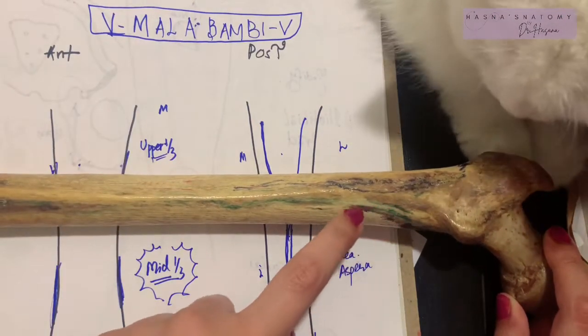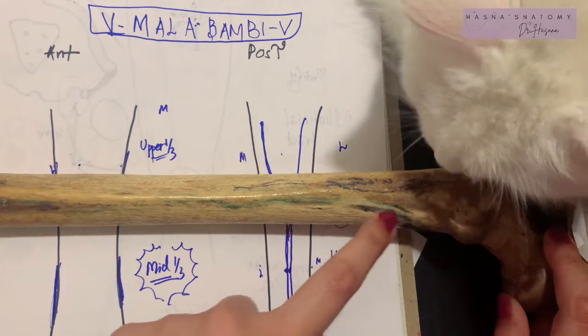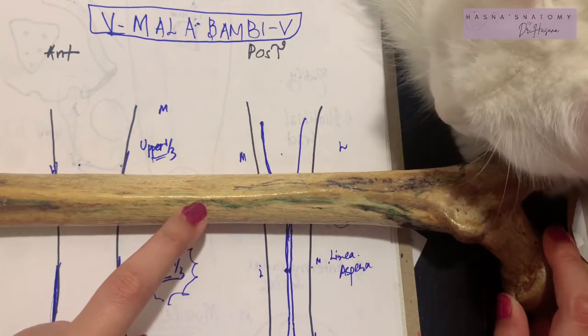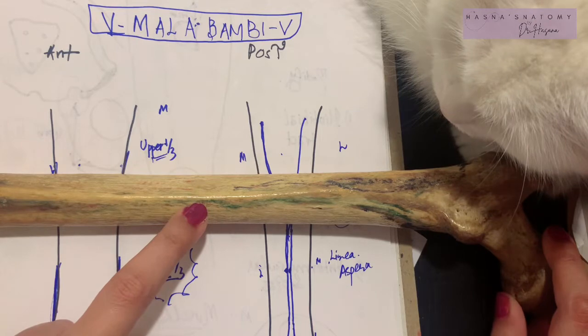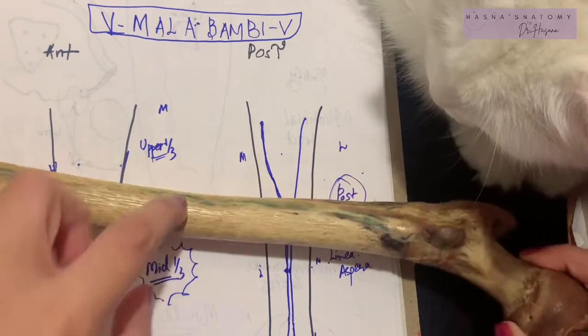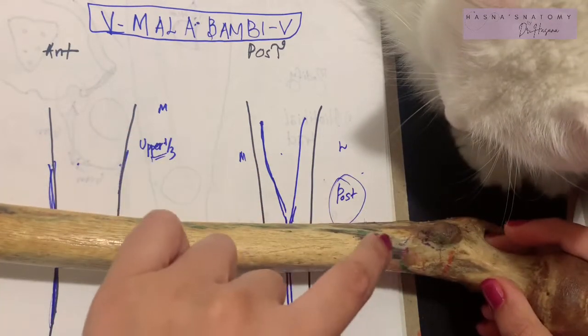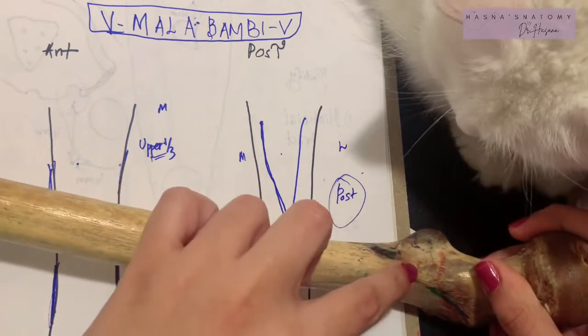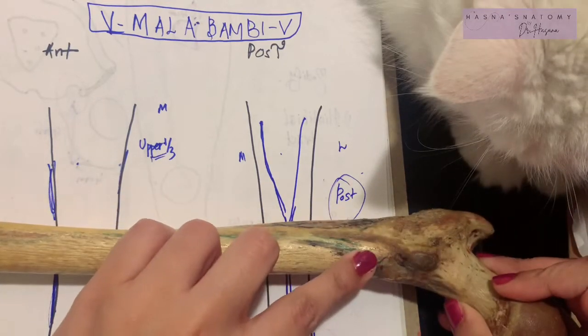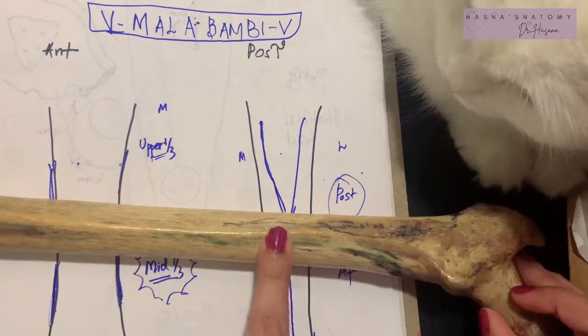VM stands for the most medial muscle attached in the posterior part of the shaft, known as the vastus medialis muscle. The vastus medialis attaches first to the intertrochanteric line in its lower part, then to the spiral line, then to the medial lip of the linea aspera, and finally the medial supracondylar line.